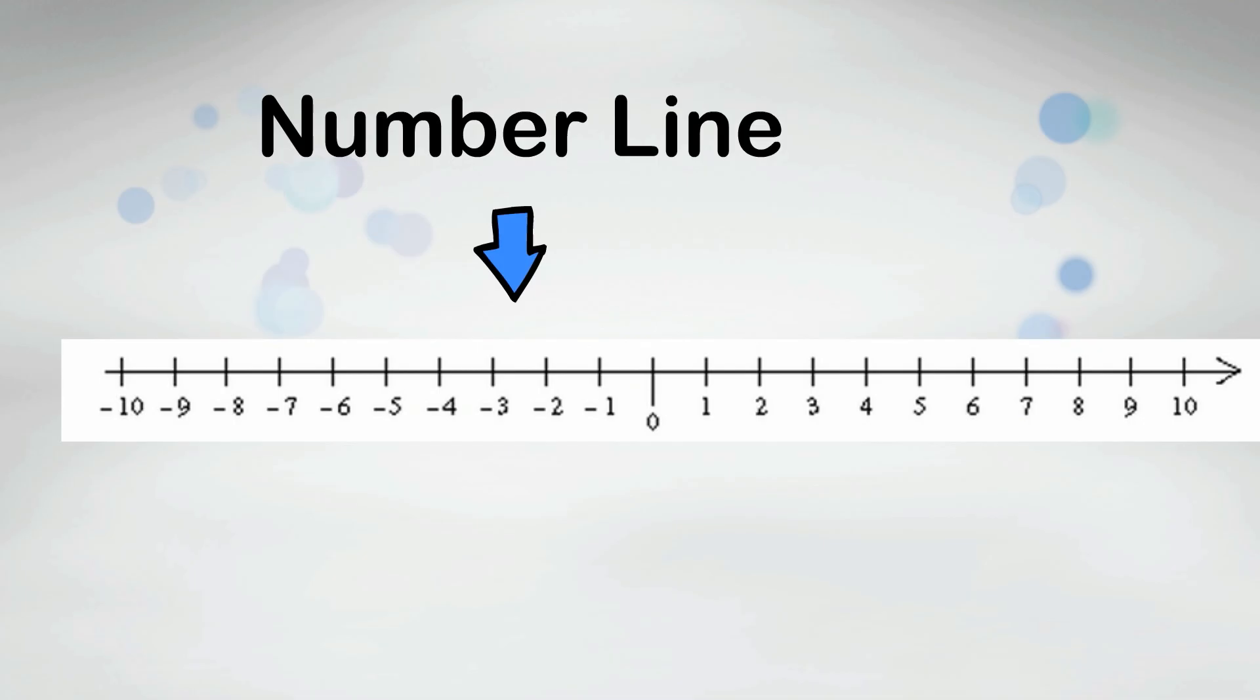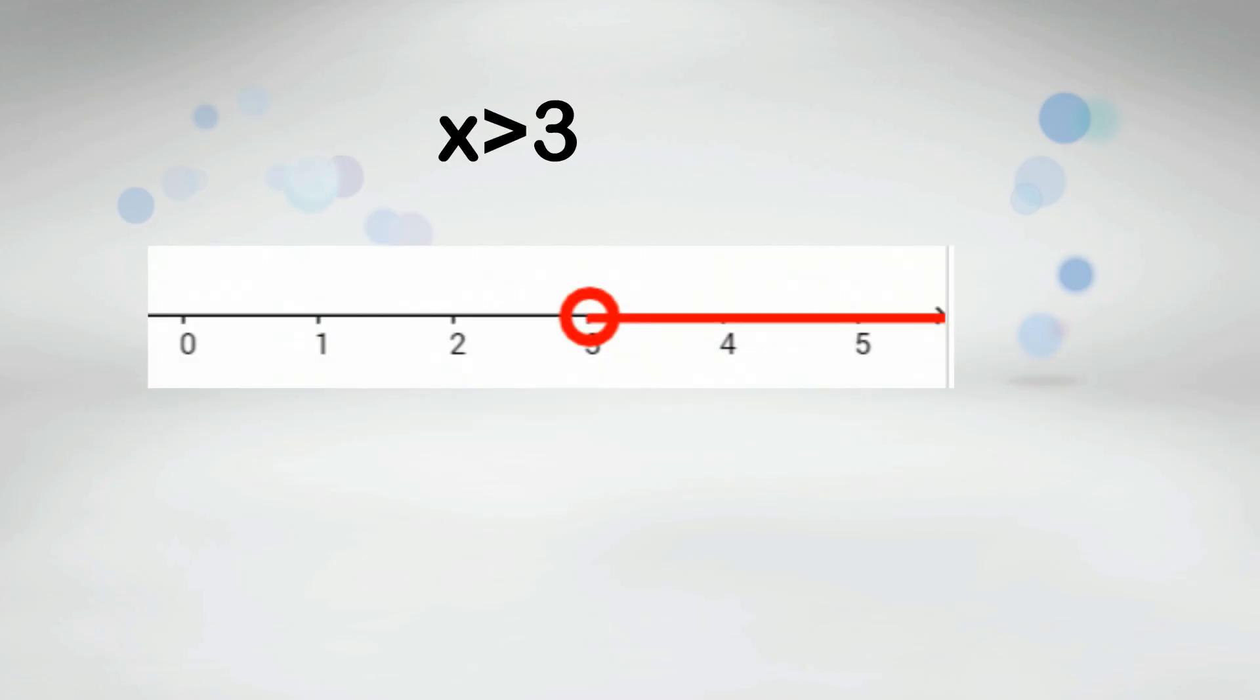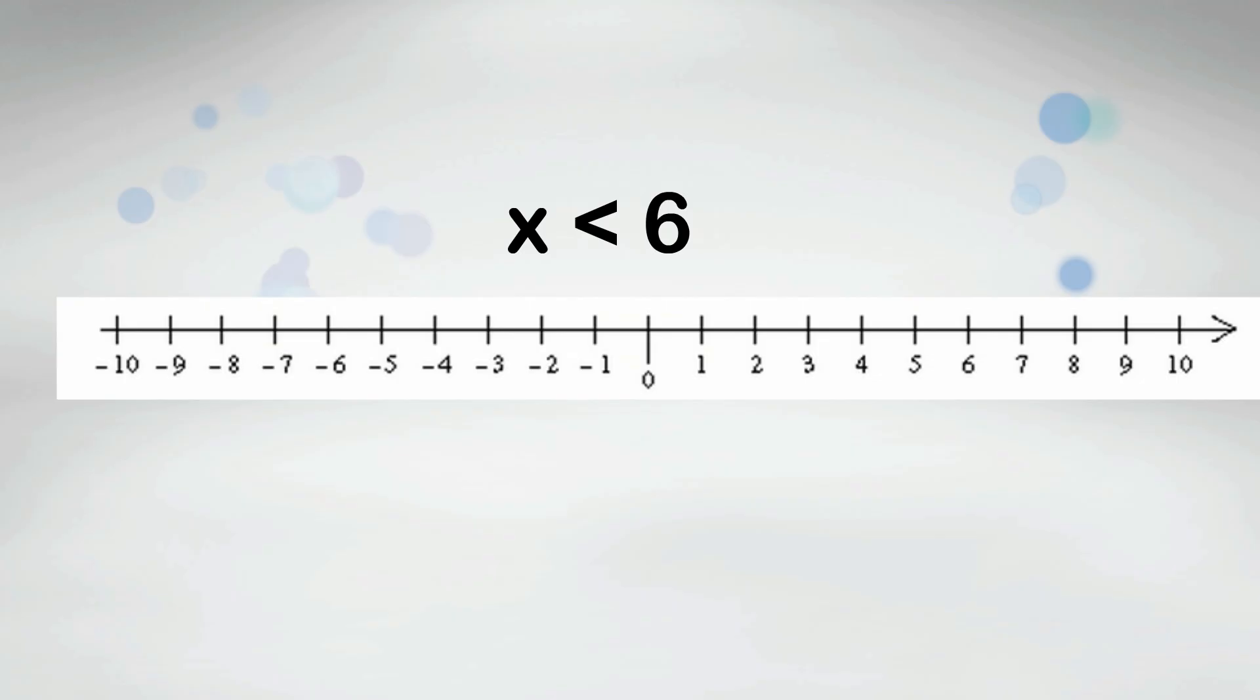On a number line if you have an open point it means the number is not included in the solution. For example x is greater than 3. Notice that you use an open point because 3 is not included. X is less than 6. Again an open point is used.